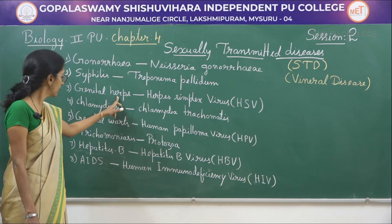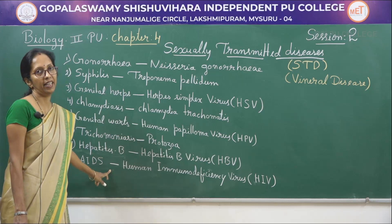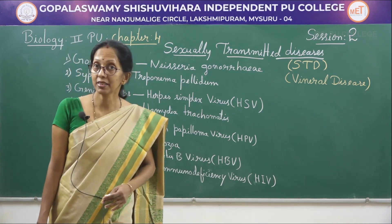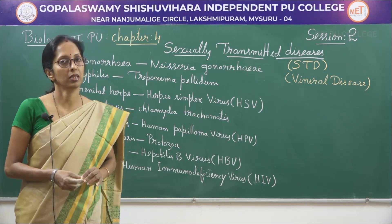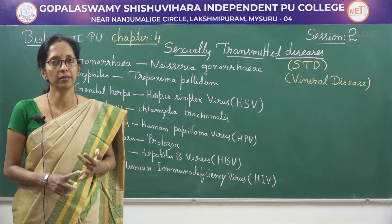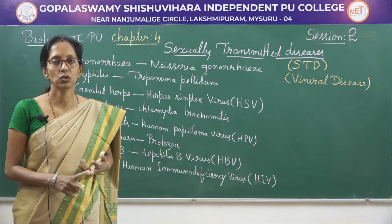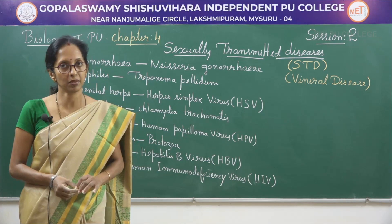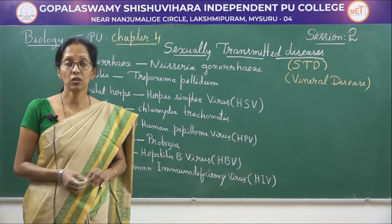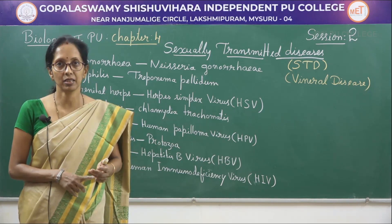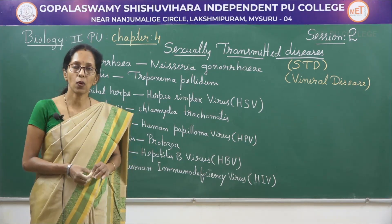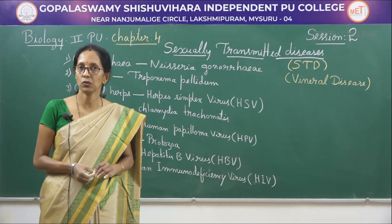Except genital herpes, hepatitis B, and AIDS, the remaining diseases are curable if detected early and treated properly. Early symptoms in males include itching, slight pain in the abdomen, fluid discharge, and swelling in the genital organ. In females, the condition is asymptomatic and hence undetected for a longer time, which may lead to complications such as pelvic inflammatory disease, abortion, stillbirth, infertility, and reproductive tract cancer.